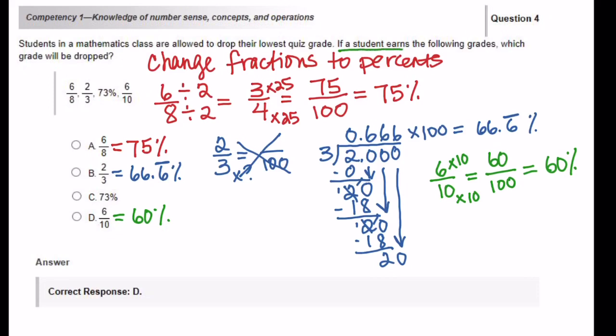Now let's go back and reread that question. If a student earns the following grades, which grade will be dropped? Now, of course, it says we want to drop the lowest quiz grade. So looking at my answer choices, I'm going to pick the 60 percent.